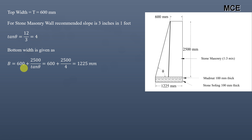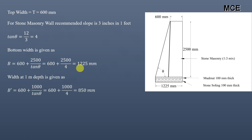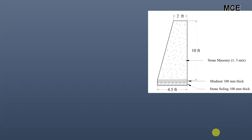Dividing the figure into a rectangle and a triangle, the rectangle base is 600 mm and the triangular portion is 2500 ÷ tan θ = 2500 ÷ 4 = 625 mm. So bottom width = 600 + 625 = 1225 mm. The width at 1 meter depth from the top = 600 + 1000 ÷ 4 = 850 mm. Note that all depths are measured from the top.